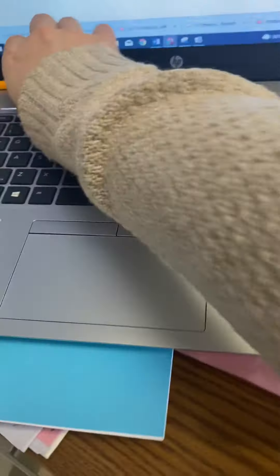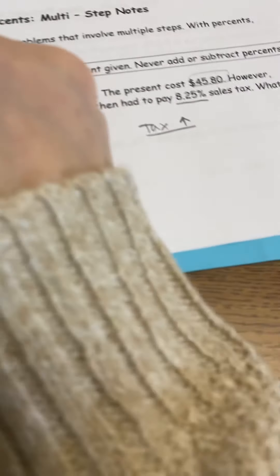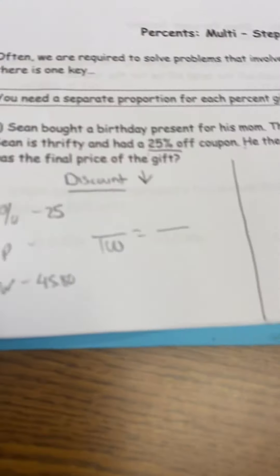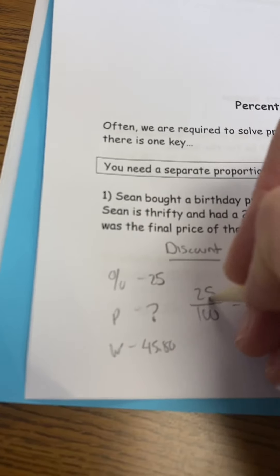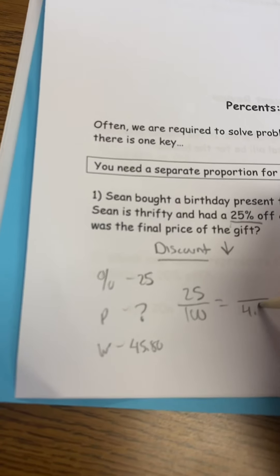All right, so let's talk about this. $45.80, that is the original cost. So the original cost has to be the whole. And do we know the percent? Yes, 25. And the part must be what we're looking for - I don't know the part.